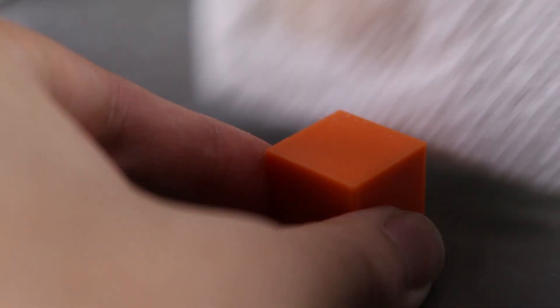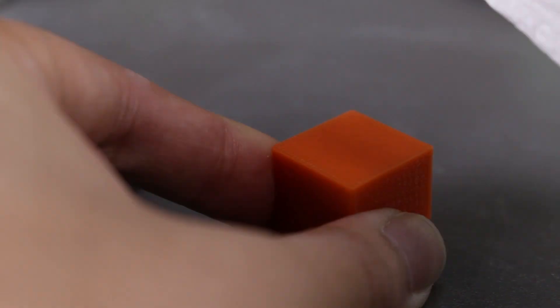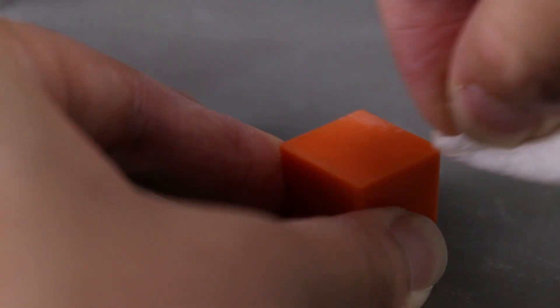It looks like it's actually working. The surface is turning matte and the lines are starting to disappear. Let's continue to do this to the other side of the cube.